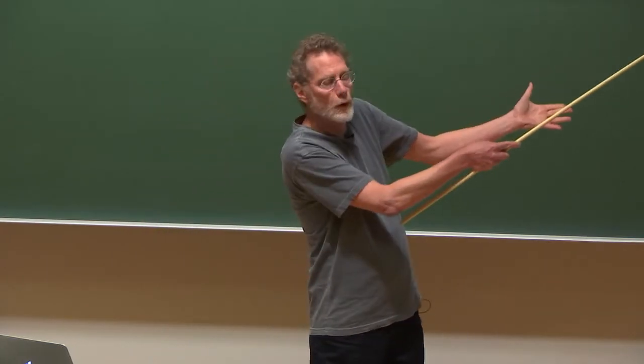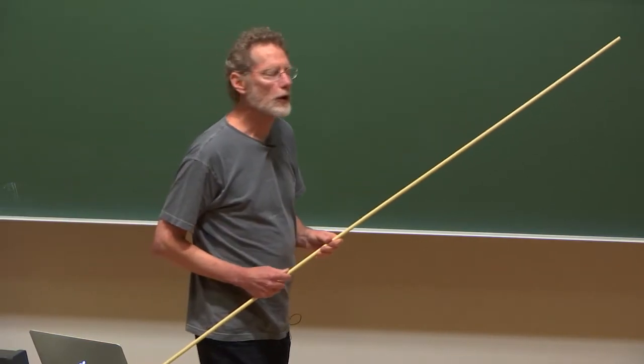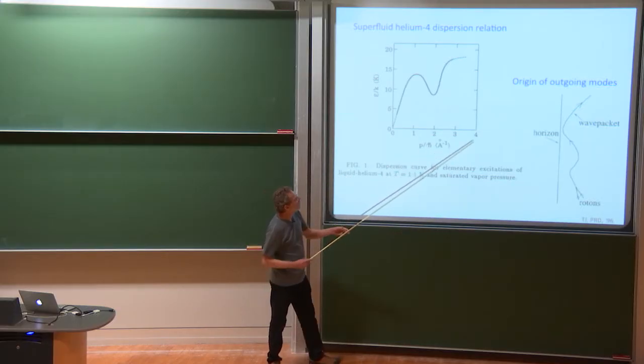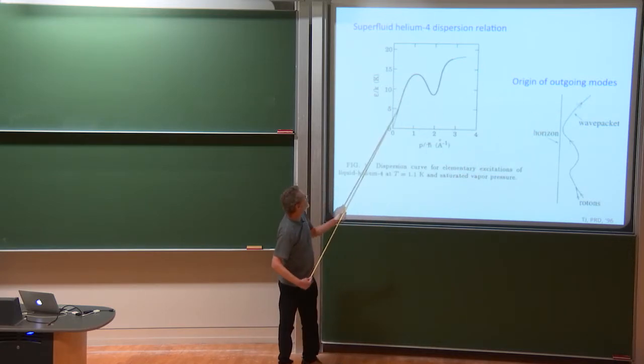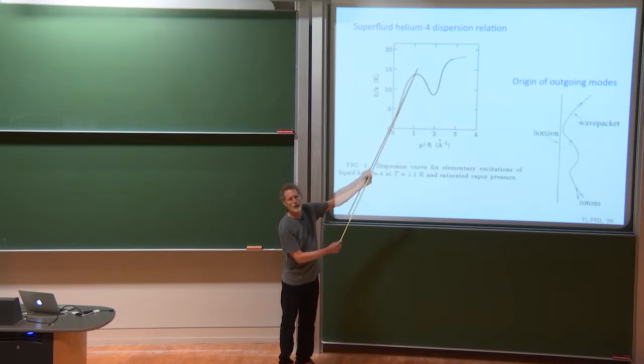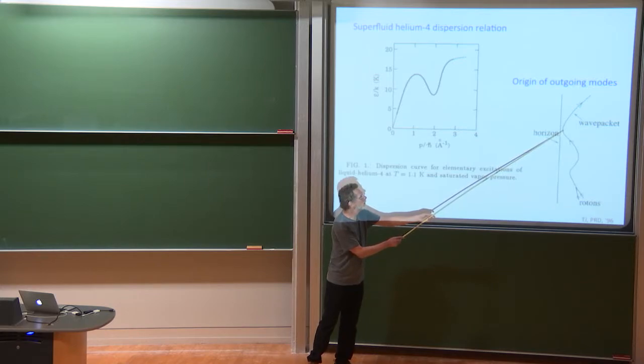So we could ask, with this situation, what would be the origin of the outgoing modes in Unruh's sonic analogy? And we can, basically, the conclusion is it would be something like this. An outgoing mode traced back to the horizon would be blue-shifting. That means on this curve, it would be running up here until eventually it reaches the point where its group velocity has dropped to be equal and opposite to the flow velocity. At that point, it can't get any closer backwards in time than that point to the horizon.